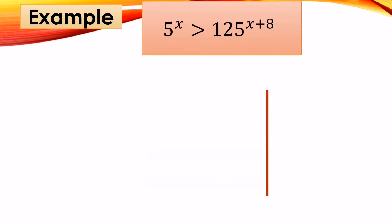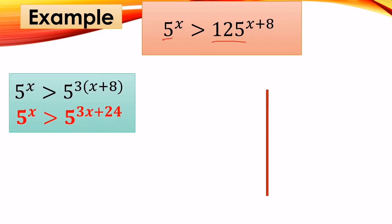Another example: 5^x > 125^(x+8). We find the common base — the common base between 5 and 125 is 5. So we rewrite it as 5^x > 5^(3(x+8)), since 5 cubed equals 125. Then using the distributive property: 3 × x = 3x and 3 × 8 = 24. So the new form is 5^x > 5^(3x+24).